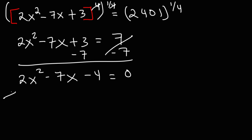In order to solve this equation, we could use the quadratic formula or we could try to factor it. I think we should definitely try to factor this equation. So here's what you need to do: multiply the leading coefficient 2 by the constant term negative 4. 2 times negative 4 is negative 8. And then find two numbers that multiply to negative 8 but add to negative 7.